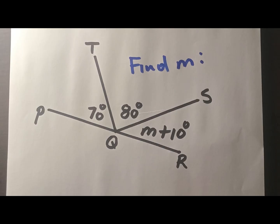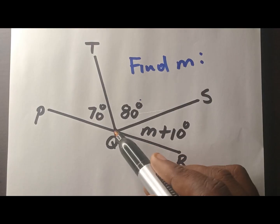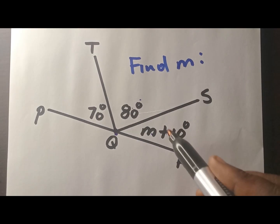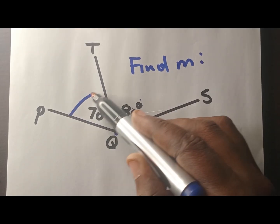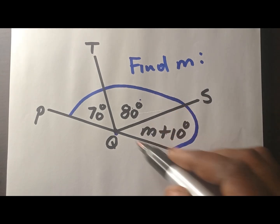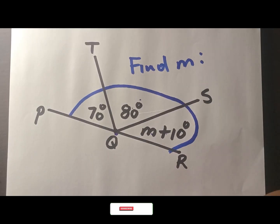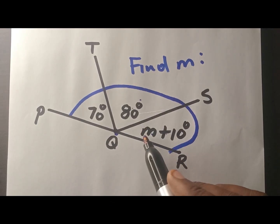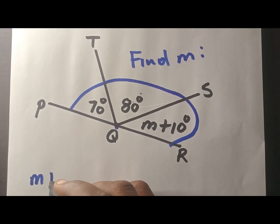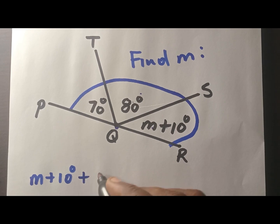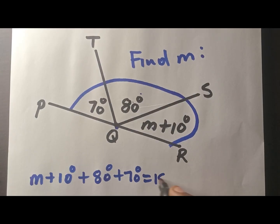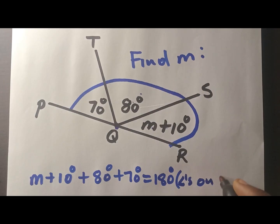What about this one? Look at point Q: the angle 7 is formed at Q, the angle 8 is formed at Q, and M plus 10 degrees is formed at Q. These angles are on the same side of the straight line. So you know you need to add them to get 180. Because we don't have M, we don't know what that angle is — that is why they say find M. These are three angles, and they will give you 180 degrees because they are angles on a straight line.